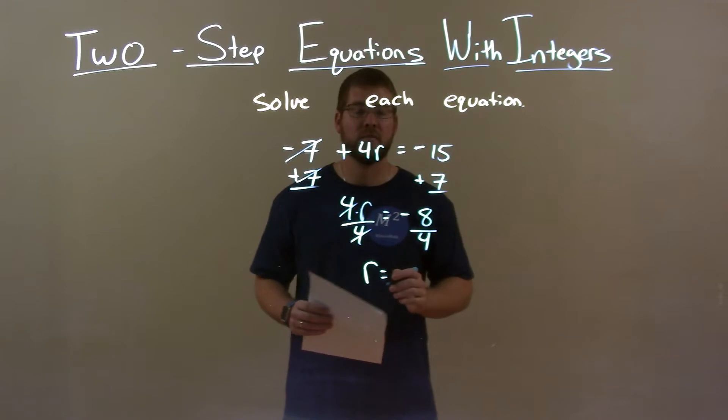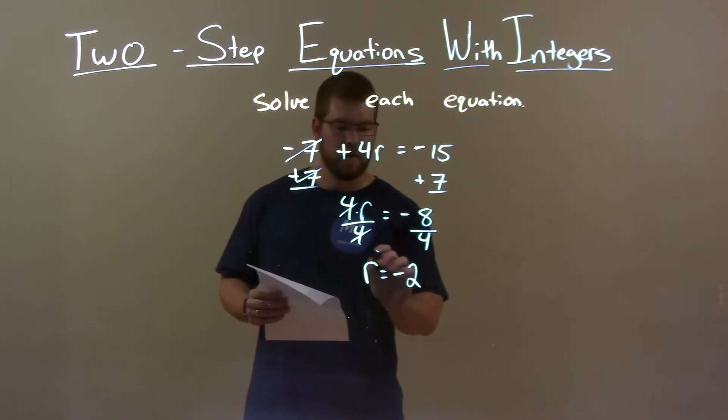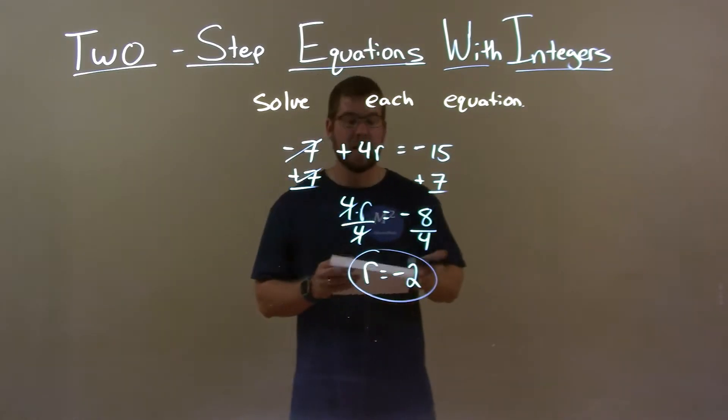So, r is by itself, and negative 8 divided by 4 is a negative 2. So, my final answer is r equals a negative 2.